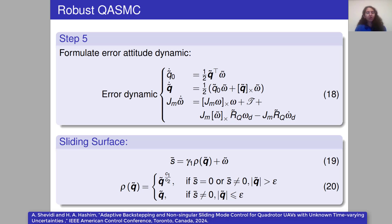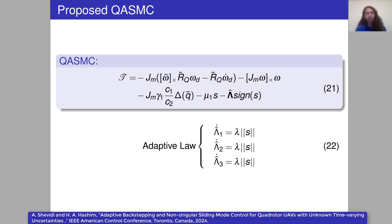We formulate the error-attitude dynamic and propose the attitude control system. To propose the attitude control system, we use sliding mode control, because it is a well-known method to handle uncertainties. We modify the conventional sliding surface to ensure the control system is non-singular. The proposed new sliding surface is defined by this equation. The quaternion adaptive sliding mode control with this adaptation law can handle uncertainty issues and reduce chattering as well.